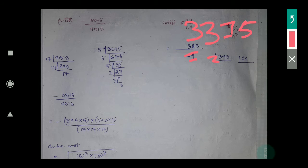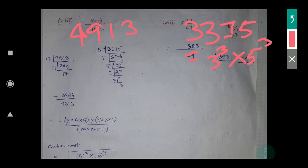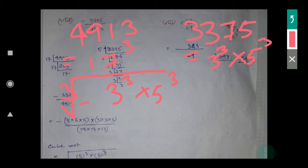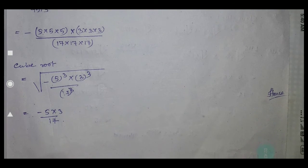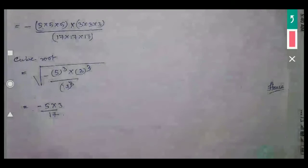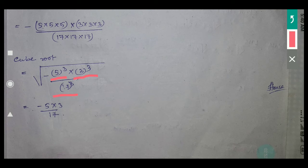The factors of 3375 are 3 cubed times 5 cubed. Now find the factors of 4913: 4913 equals 17 cubed. So we need the cube root of 3375 divided by 4913, which we can write as the cube root of 3 cubed times 5 cubed divided by 17 cubed.